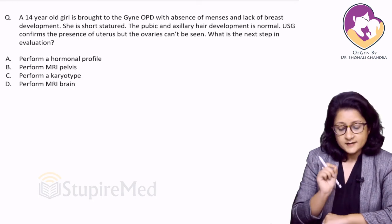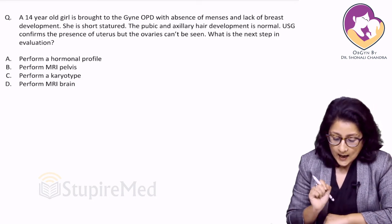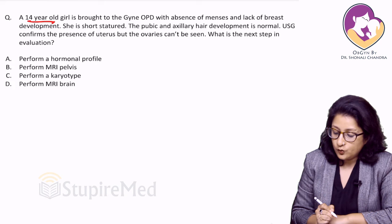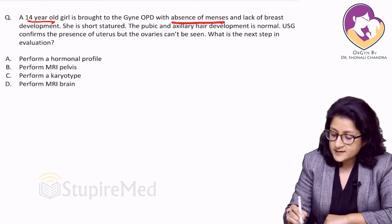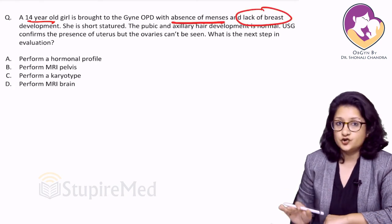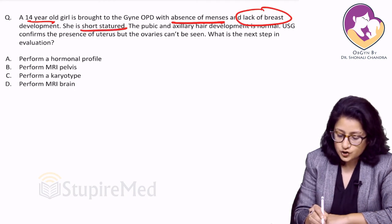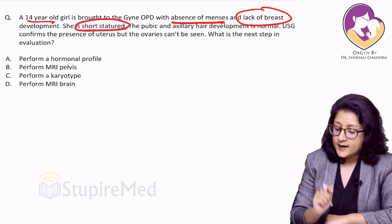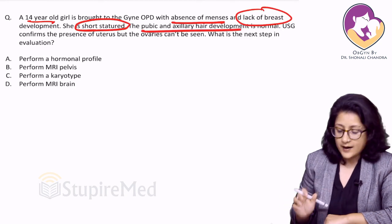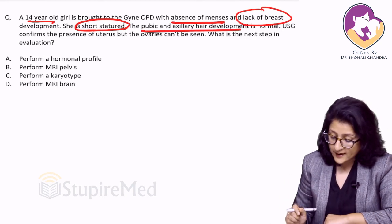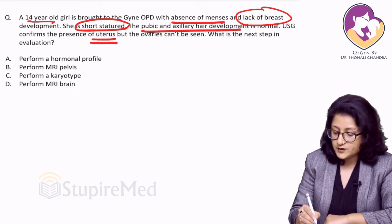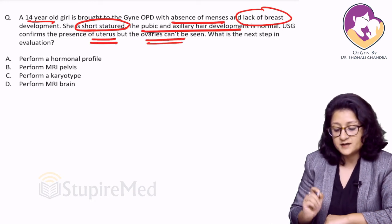Alright friends, third case. A 14-year-old girl is brought to the gynae OPD with absence of menses and lack of breast development — so estrogen is not there. She is short-statured. Pubic and axillary hair development is normal, so androgens are present. The USG confirms the presence of the uterus but ovaries can't be seen.